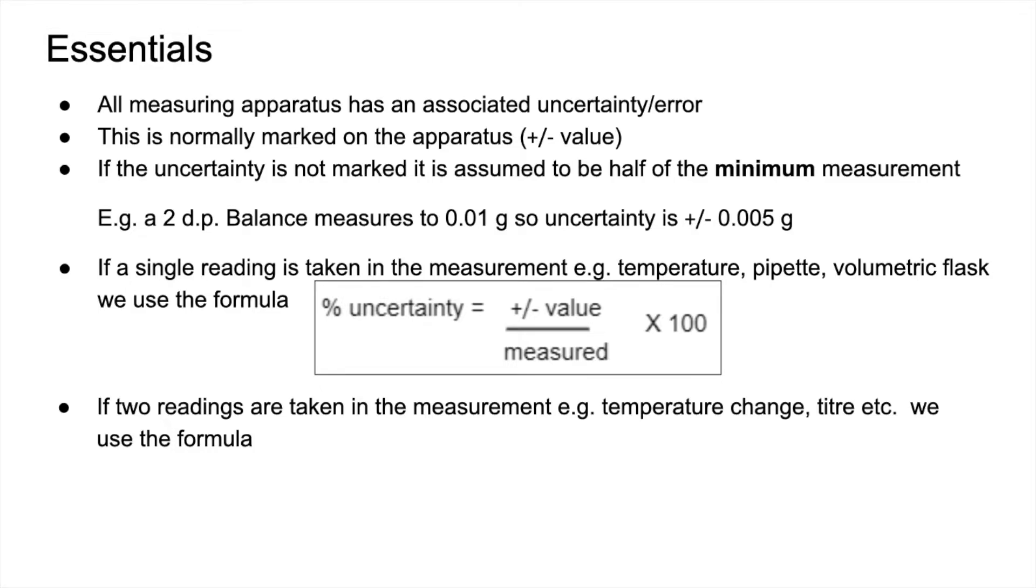If you take two readings in the measurement, so a temperature change, you've got a before and after temperature, a titration, an initial and final burette reading, we use this formula. It's basically the same formula, but we put times 2 after the plus or minus value. We need to double the error because the error is in each reading.